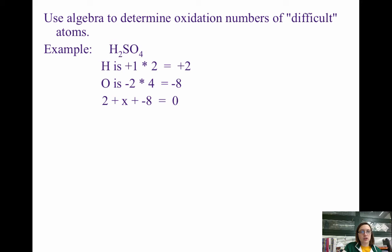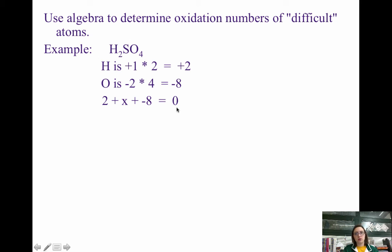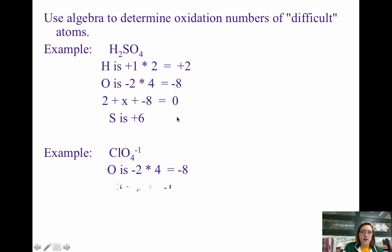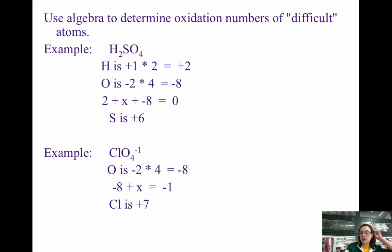This example shows using algebra: knowing hydrogen is +1 and oxygen is −2, plug in X for sulfur. The compound is neutral, so it must equal zero. You can use algebra to determine all difficult oxidation numbers. Similarly, notice that when chlorine is combined with oxygen, Cl is not −1 — it can be as high as +7, because oxygen takes the negative role.